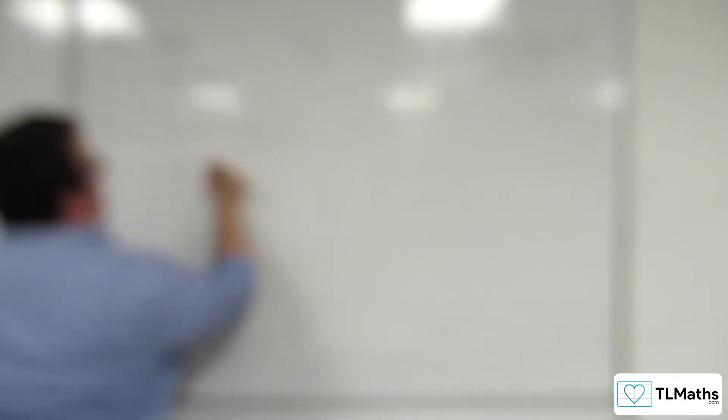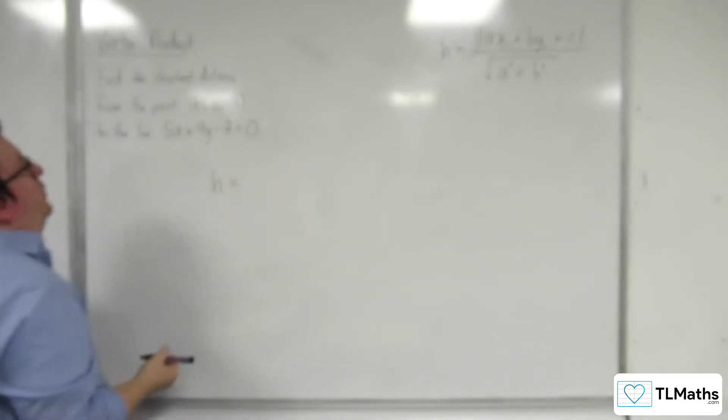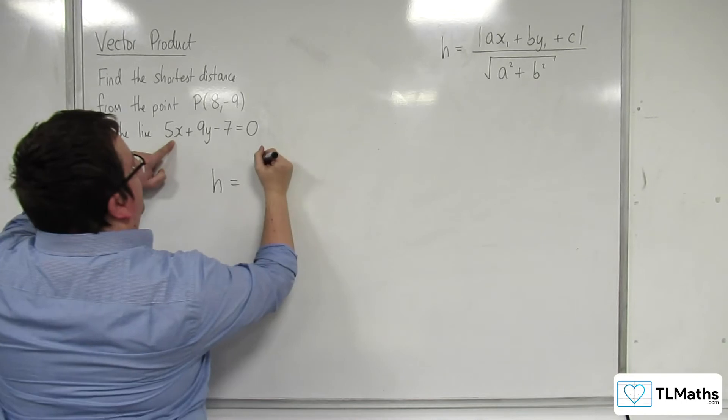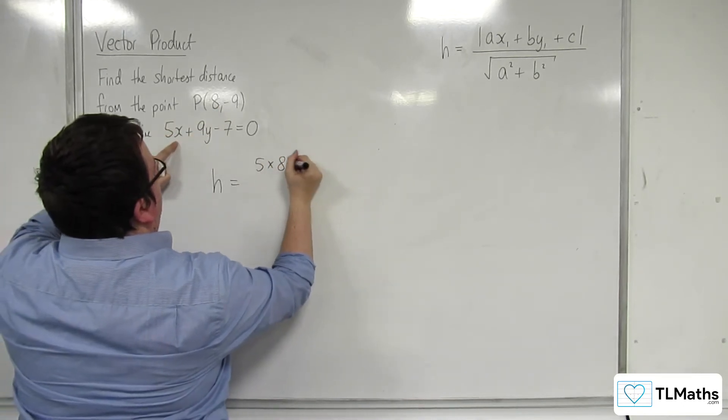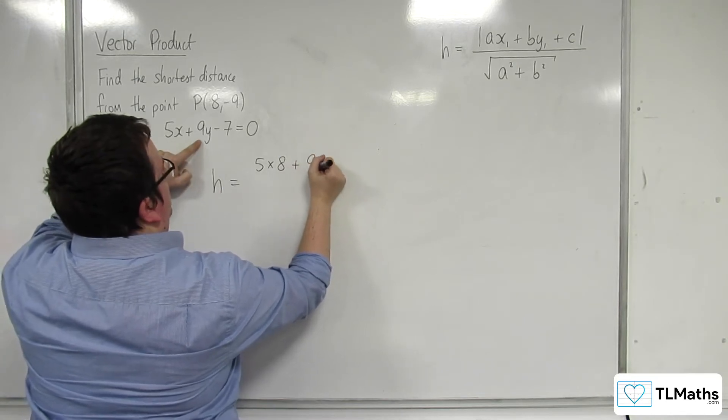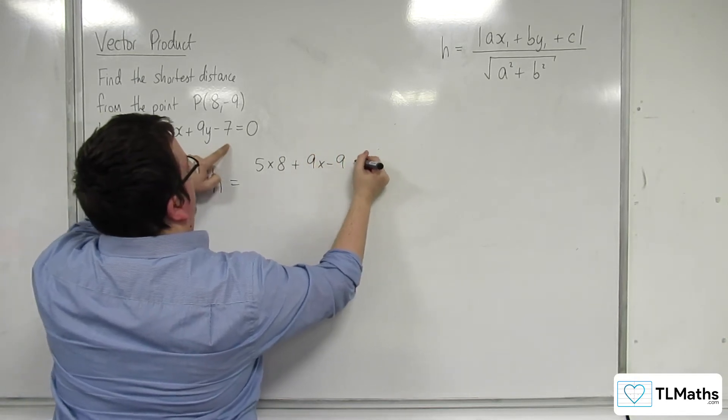So we can do this straight off. H is equal to... we're going to substitute 8, -9 into this: 5 lots of 8 plus 9 lots of -9, take away 7.